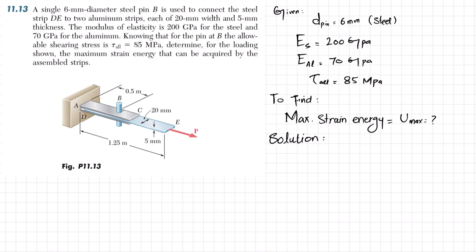Due to the applied load P at the pin, there will be double shear. The load P will be divided by two on each side of the pin. Since the pin is in double shear, and we are given the allowable shearing stress, we will find the load P that can be applied for this double shear condition.